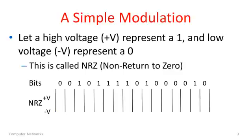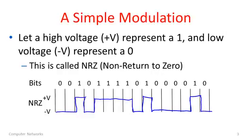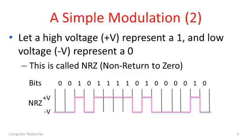For a 0 we have a low voltage. Then I go up to a high voltage for a 1, down to a 0, up for a 1, then 1, 1, 1, 0, 1, 0, 0, 0, 0, 0, 0, 1, 0. There's a little bit of noise on there — that's just the way a waveform would look. Let me clean it up so you can see it a little more. That's one kind of simple modulation.